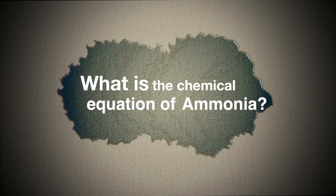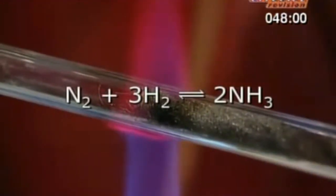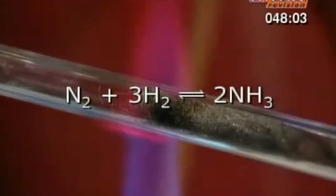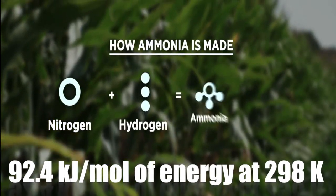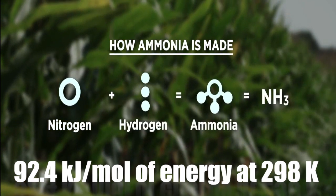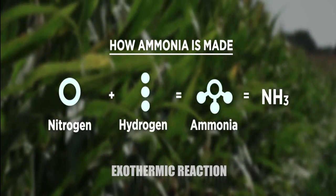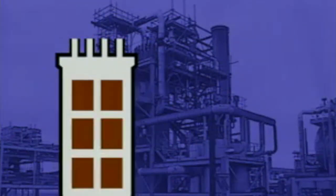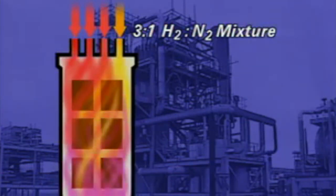Looking deeper, the reaction equation of ammonia is: nitrogen gas molecules plus 3 hydrogen gas molecules, which creates 2 ammonia gas molecules. This reaction releases 92.4 kilojoules per mole of energy at 298 Kelvin. Thus, it is an exothermic reaction. The hydrogen and nitrogen stoichiometric 3-to-1 molar ratio is needed for ammonia synthesis or production.